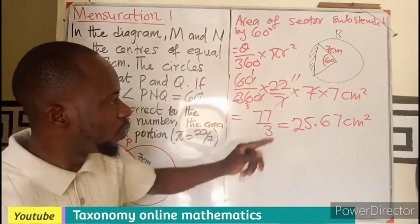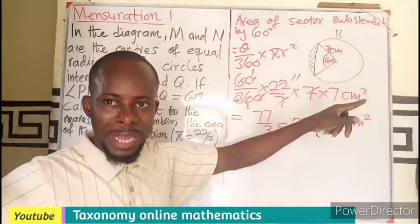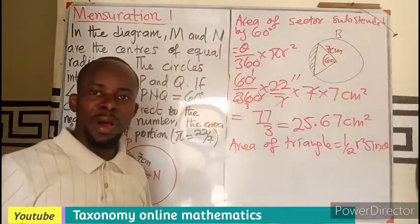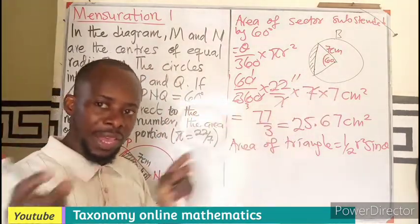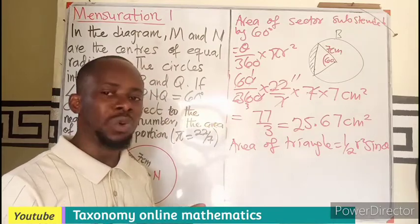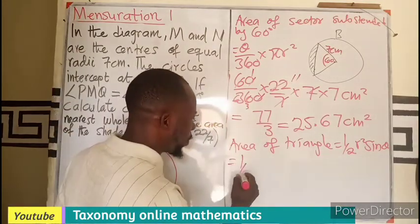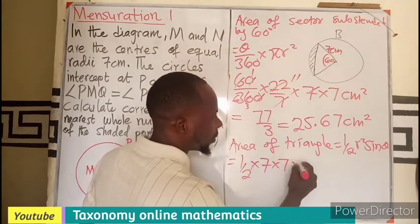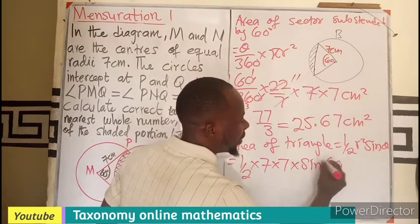The next thing is to find the area of the triangle formed at the center. We know the area of the triangle formed at the center having the same radius is given as ½r²sinθ.